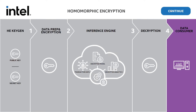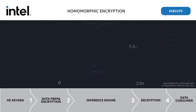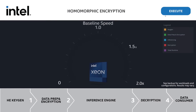Now that we understand the operating model, let's look at the results. The speedometer in this demo compares the results with and without the Intel Homomorphic Encryption Acceleration Library. Clicking the execute button runs all steps on a third-generation Intel Xeon platform. This demo performs 256,000 secure predictions using a logistic regression model with 242 weights and a 128-bit AES equivalent security level.